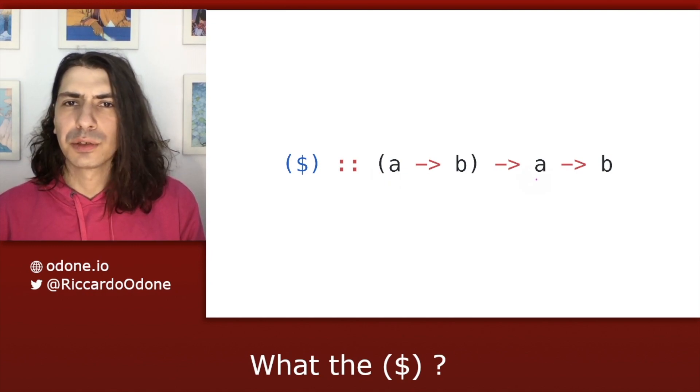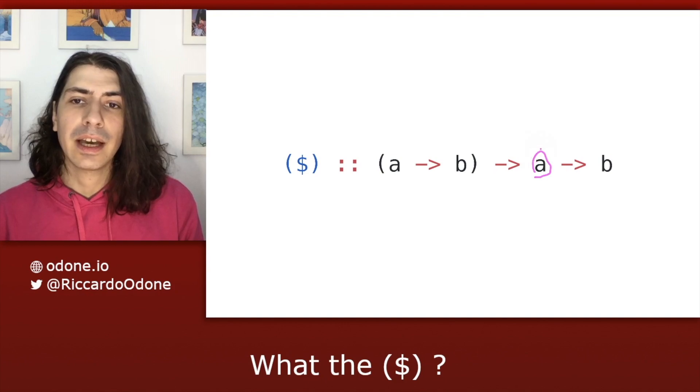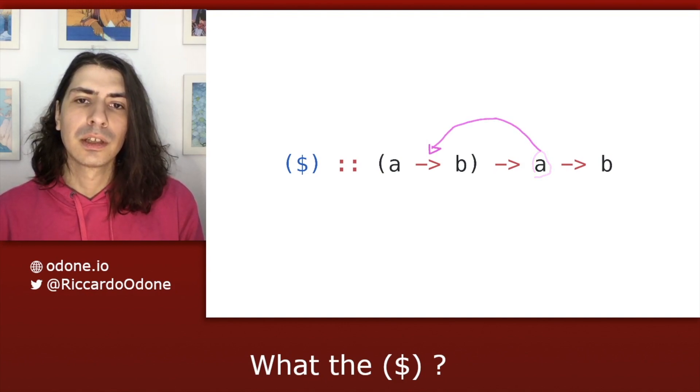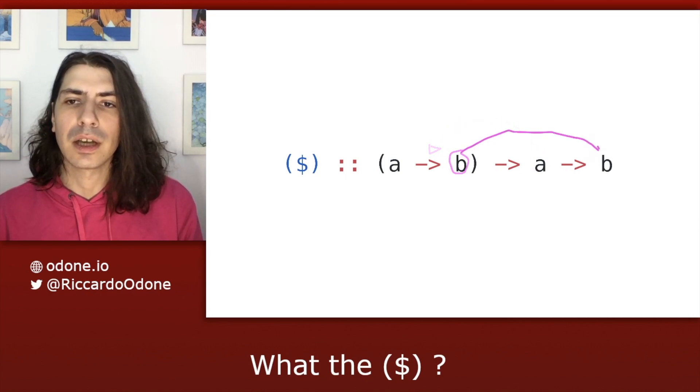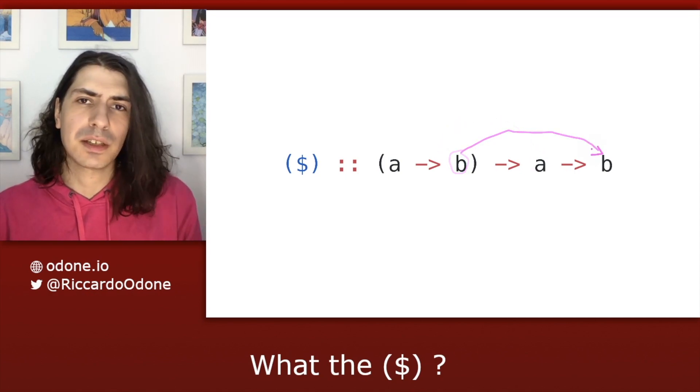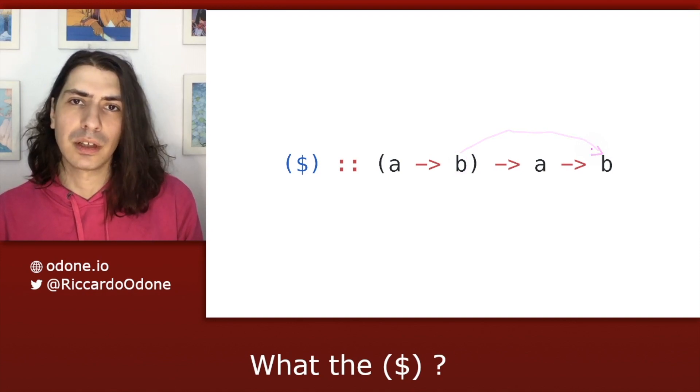And it's not difficult to imagine that the implementation of this function takes this value of type A and passes it to this function here to produce the value of type B that we need as an output. And in fact, that's exactly how it's implemented in Haskell.